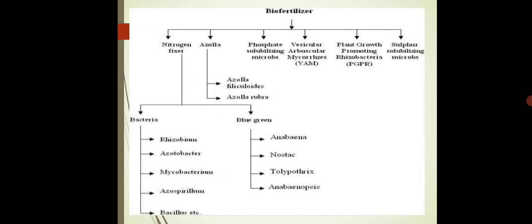This is the flow chart of different types of biofertilizers. First is bacterial biofertilizer, which includes active strains of nitrogen-fixing bacteria. Examples are Rhizobium, Azotobacter, Mycobacterium, Azospirillum, and Bacillus. Rhizobium are active strains present in root nodules and are used for leguminous plants. Free-living organisms are used for rice, wheat, jowar, and bajra. Azospirillum are active strains of soil-inhabiting nitrogen-fixing bacteria.